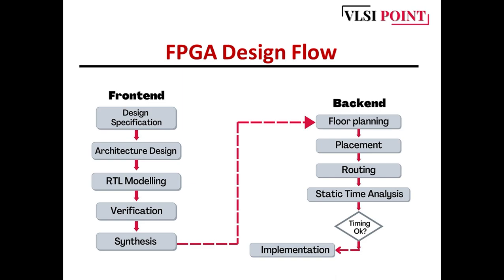Suppose you have an idea and need to design a circuit. First, you need to specify the design — explain the protocols, the clock frequency information, the input/output ports available, and exactly how the design will work. Everything must be specified before proceeding. This is the design specification step. Next is architecture design, where a block-level architecture is generated and we determine how many sub-blocks are required and how they are connected through internal wires.